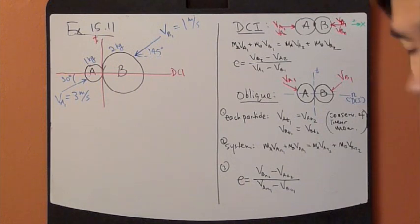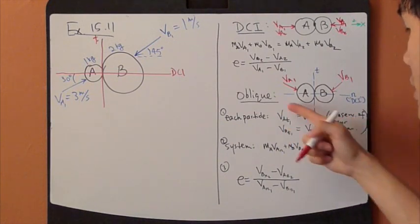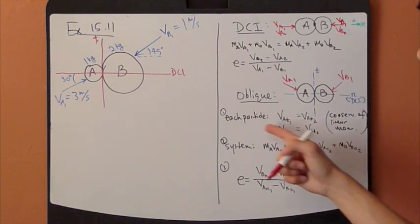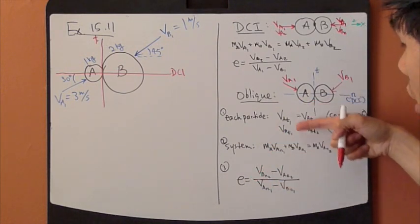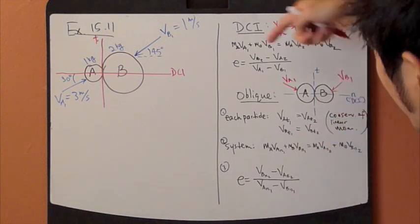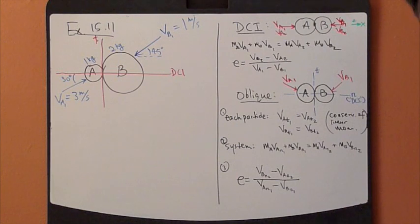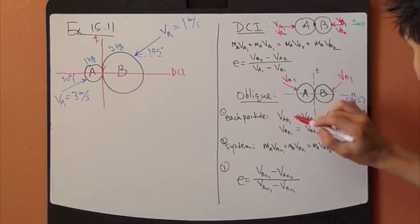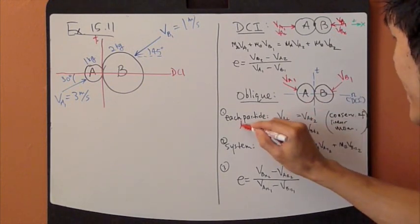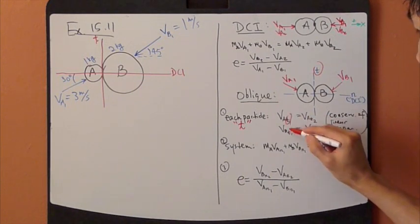There are actually three things going on. First of all, the conservation of linear momentum applies to each particle. So you end up with three equations. If you apply this equation to particle A, mass just drops out of the equation. So you're left with this. However, this applies to the T direction, tangent direction only.